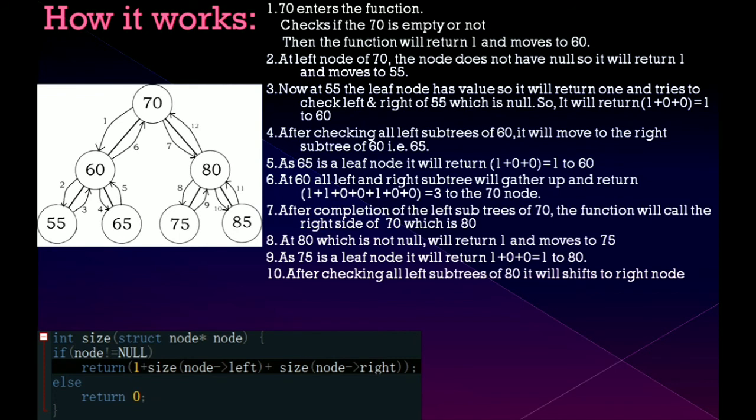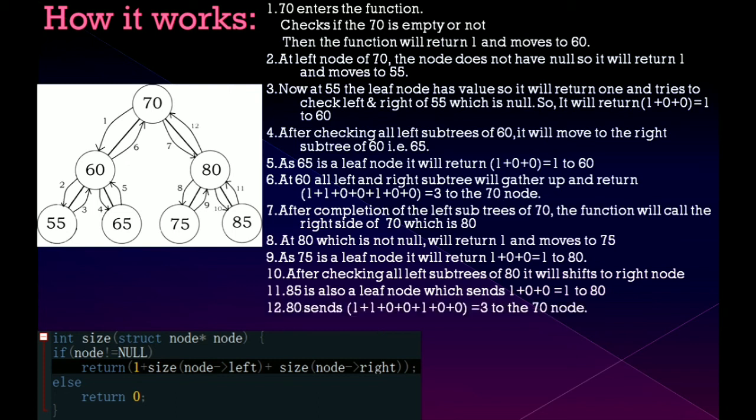After checking 75, it will return to 80 and it will move to the right node which is size of 85. 85 is also leaf node which sends 1 to 80. 80 sends 3 to 70 node. This will all sum up and return 7 to the main function where the function was called.